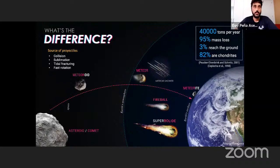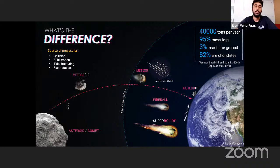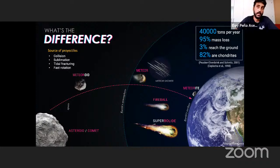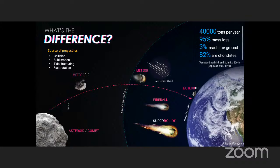This ablation process generates a luminous column, which is what we call the meteor. Depending on the brightness of this column, we refer to it as a fireball, bolide, or even a superbolide if it can be detected from space. The periodic encounter of the Earth with meteoroids associated to the same parent body is what we call a meteor shower.